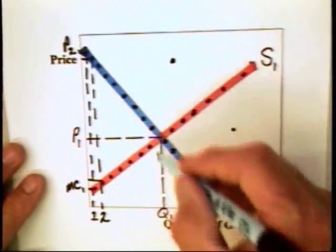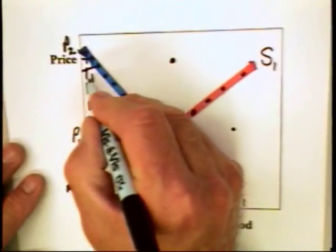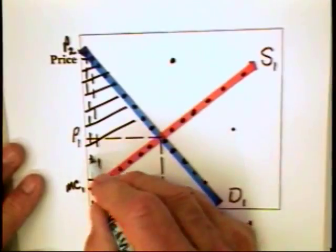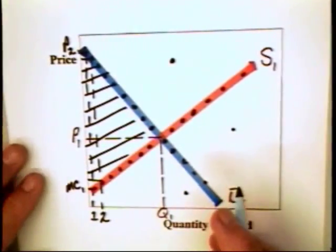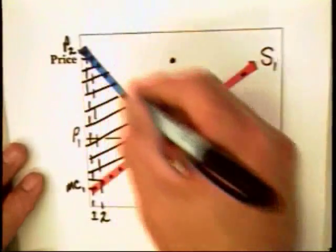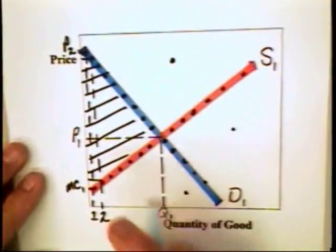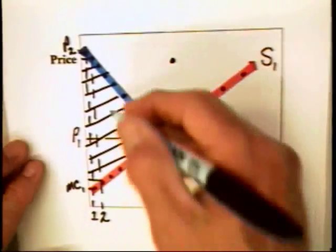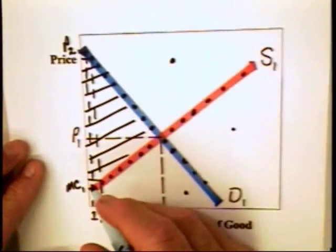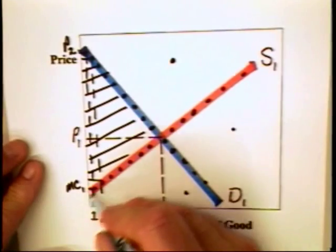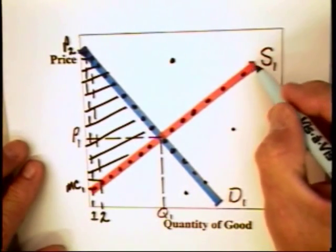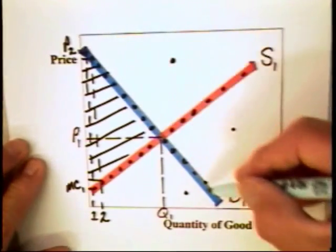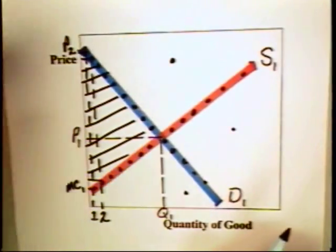The moral of the story is that if Q1 units are produced, then you get additional value equal to this triangular area here, and that triangle is as much additional welfare as you can get from trading. Now, this efficiency in the market occurs because there is a presumption that all costs of production are captured by the supply curve. There is also the presumption that all benefits are captured by the demand curve.